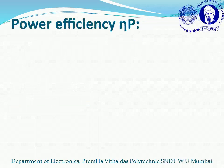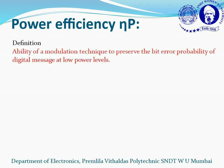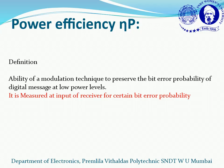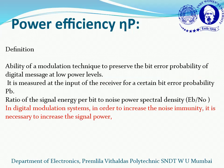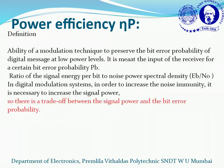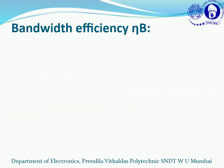Let us explore these factors one by one. Power efficiency is the ability of a modulation technique to preserve the bit error probability of a digital message at low power levels. It is measured at the input of a receiver. Power efficiency is defined as the ratio of signal energy per bit to the noise power spectral density. In digital modulation systems, to increase noise immunity it is necessary to increase signal power, so there is a trade-off between signal power and bit error probability.